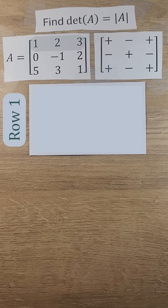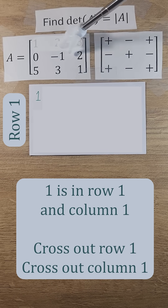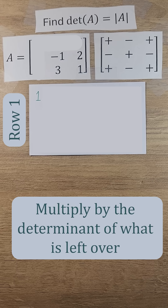Using row 1, we bring down the first element, which is 1. Since we have a plus sign in our sign matrix in the same position, we leave it as positive 1. Then we multiply 1 by the determinant of the matrix of the elements left over when we cross out the row and column associated with our value 1. We multiply our 1 by the determinant of this remaining matrix.